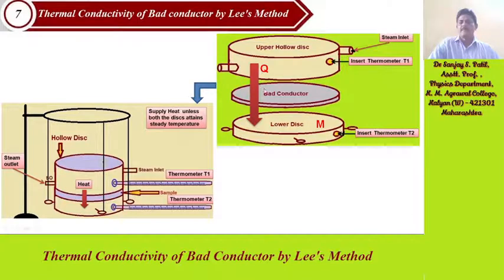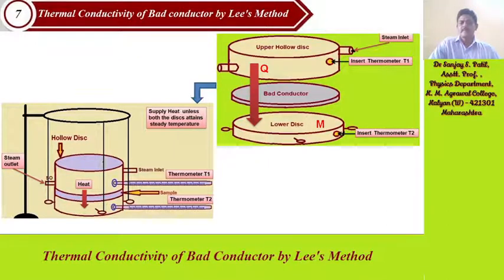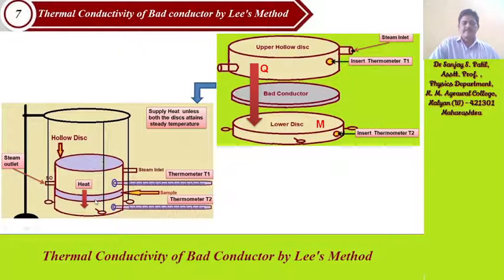Heat is passing through this bare conductor to the lower disk of mass M. We have kept two holes — hole one for the upper hollow disk and hole two for the lower disk. The arrangement is: upper hollow disk, lower disk, and in between the sample is kept. Thermometer T1 is inserted into the hole of the upper hollow disk and thermometer T2 is inserted into the lower disk.